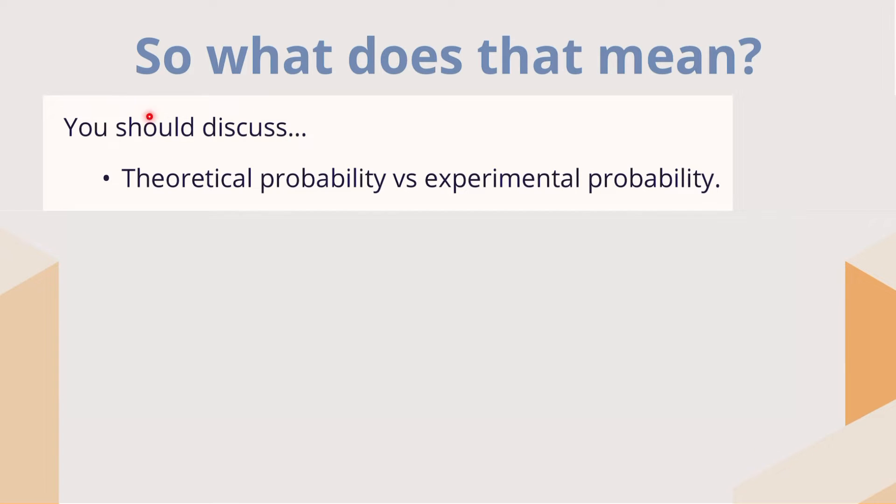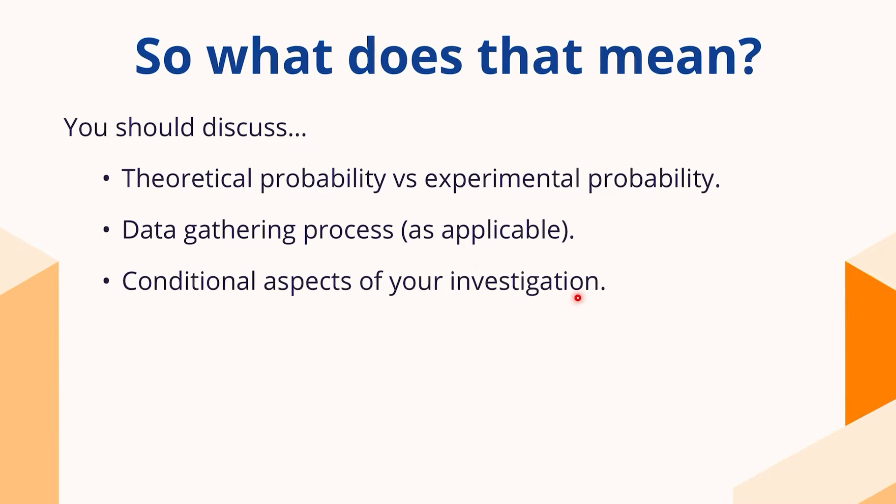You should discuss theoretical probability versus experimental probability — why are you using one over the other, and should you use both? Show your knowledge about the different aspects of probability and the data gathering process if applicable. You might be working on theoretical probability, or on experimental probability where you've repeated the same activity to get that relative frequency and apply it to your investigation. And definitely address any conditional aspects — conditional probability adds a layer of complexity, allowing you to say: if this happens, I have this probability; if this happens, I have this other probability. That conditions adds depth and demonstrates further understanding.